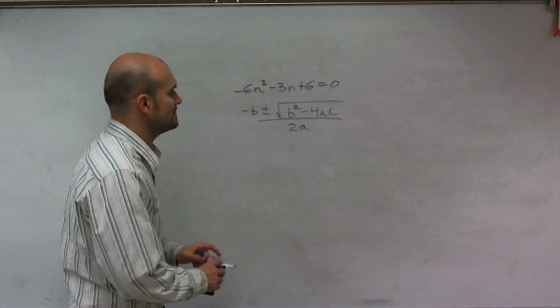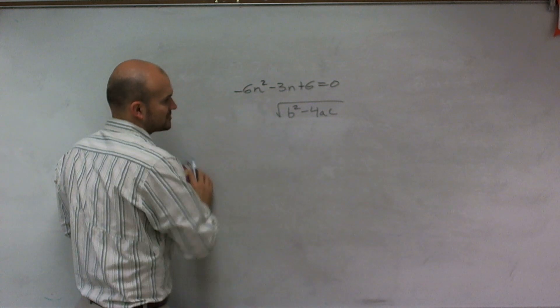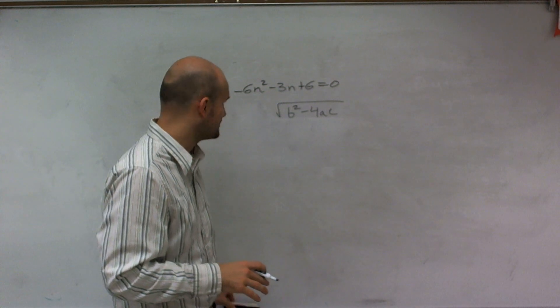So when looking at the discriminant, all we're going to be concerned about is what's going to be under our square root, because we want to know what type of number we're going to be taking the square root of.